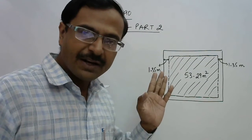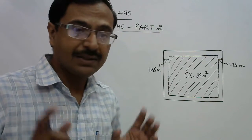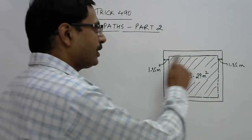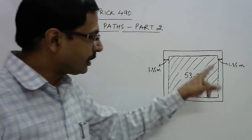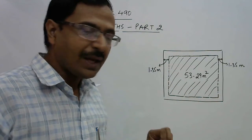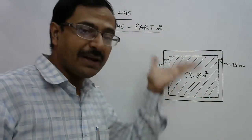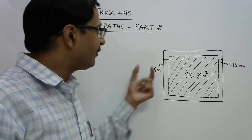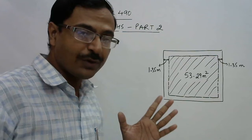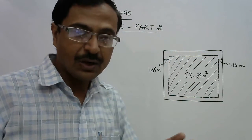It is a similar kind of problem, but the only difference is that this time the path is drawn outside the plot. The shaded part is the plot and its area is given as 53.29 meter square, and the path is inscribed on the outside of that periphery and the width of the path is 1.35 meters. We need to find out the area of the unshaded portion, that is the area of the path.